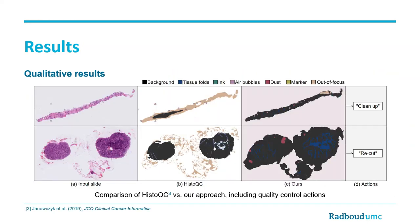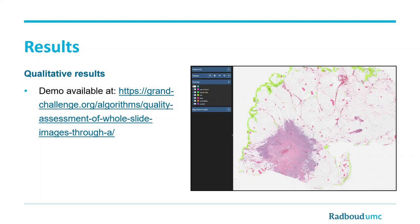We also compared the slide-level performance of our artifact segmentation module with that of HistoQC, an open-source quality control tool for whole-slide images. Our approach seems to include more of the useful tissue regions and segment several artifact types, such as tissue folds, out-of-focus, and dust, more accurately. A demo of the segmentation network is available via the following link, where you can use an interactive viewer to explore the predictions made by the artifact segmentation module on a few example whole-slide images.